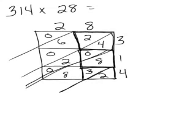So 2 plus nothing is 2. Then I have 8 plus 3 plus 8. Well 8 plus 8 is 16 plus 3 more is 19. So put the 9 here and I carry the 1 into the next diagonal.